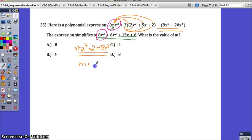So this is really all you need from all of that information. What would be in the m spot if you end up getting an 8x cubed? Basically, m times 2 equals 8. What times 2 equals 8? So m would be equal to 4.